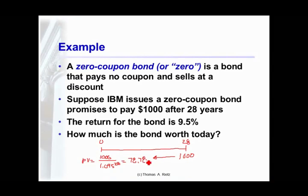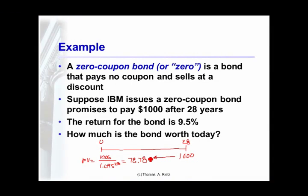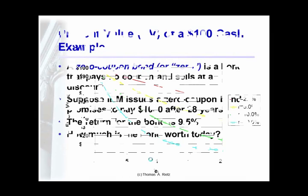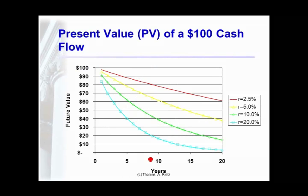So in order to buy myself $1,000 in 28 years, I have to spend $78.78 today. How much I have to pay for a given future cash flow depends upon how far in the future it is and what the interest rate is. This is an exponential decay.